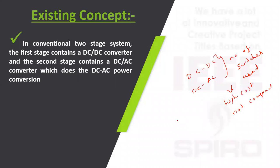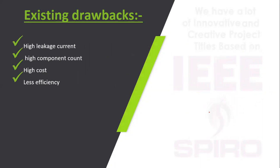An essential requirement of a solar inverter is maintaining zero leakage current. The existing drawbacks of conventional inverters include high leakage current, high component count, high cost, and reduced efficiency due to the large number of switches and other active and passive devices.